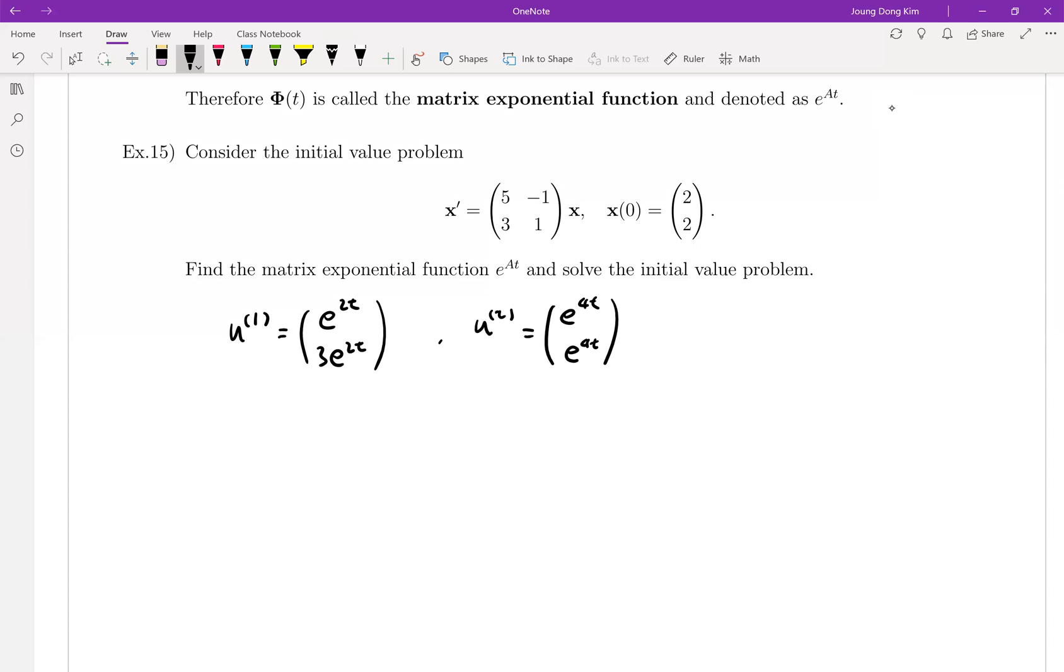Since we know u^(1) and u^(2) form the fundamental set of solution, your solution is the linear combination form of these two vector functions. Which is c1 times, or we can combine directly. The vector x(t) equals c1*e^(2t) + c2*e^(4t) in the first component, and 3c1*e^(2t) + c2*e^(4t) in the second component.